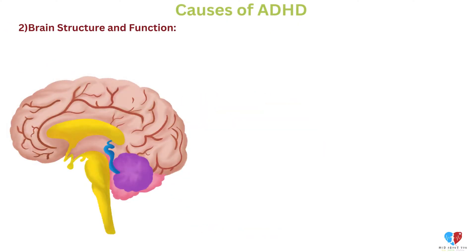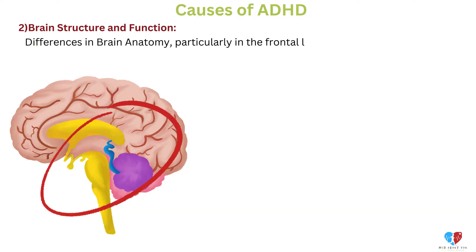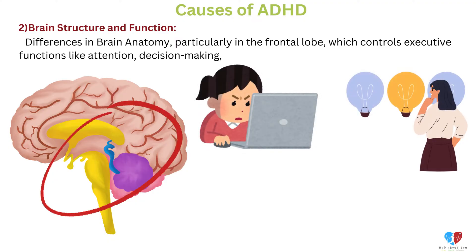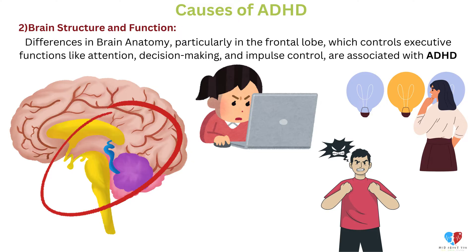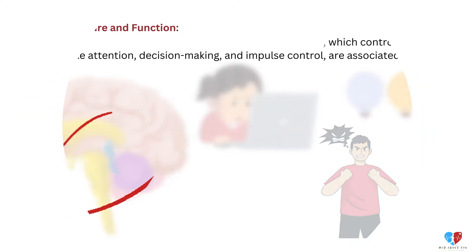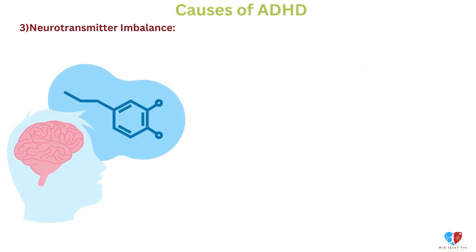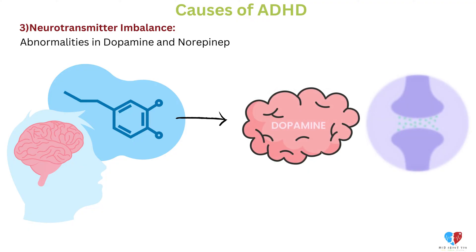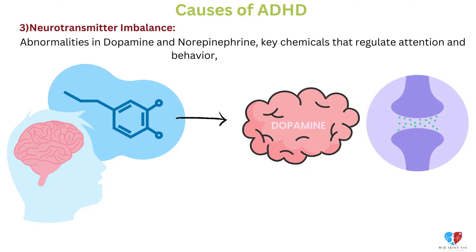2. Brain structure and function. Differences in brain anatomy, particularly in the frontal lobe, which controls executive functions like attention, decision-making, and impulse control, are associated with ADHD. 3. Neurotransmitter imbalance. Abnormalities in dopamine and norepinephrine, key chemicals that regulate attention and behavior, are linked to ADHD.